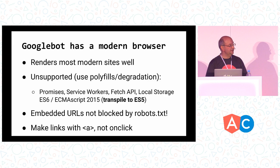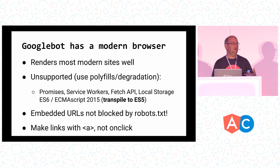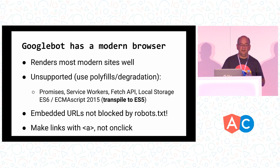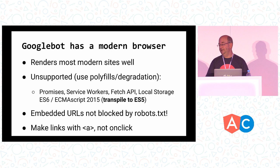We also don't fully support ES6, so if you're transpiling your code, make sure you transpile to ES5 if you need Googlebot to actually render the pages. Also, the robots.txt standard tells search engines which URLs they're allowed to crawl — for us to render your pages properly, we need to be able to crawl all embedded content. We sometimes see the pattern of making clickable elements that aren't real links, which is problematic because we can't follow those to the rest of your content — make sure links render as A elements.